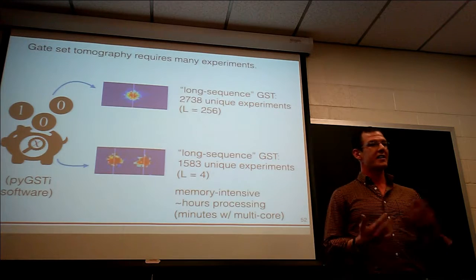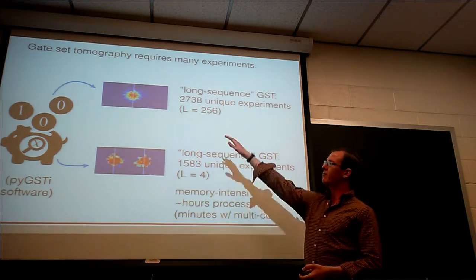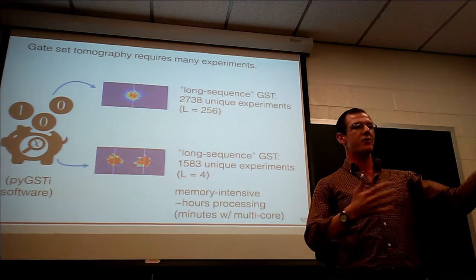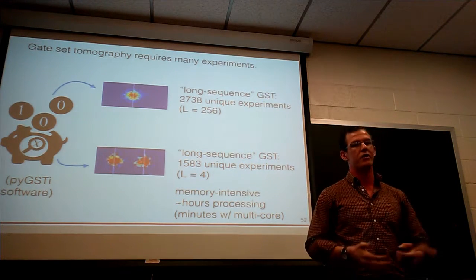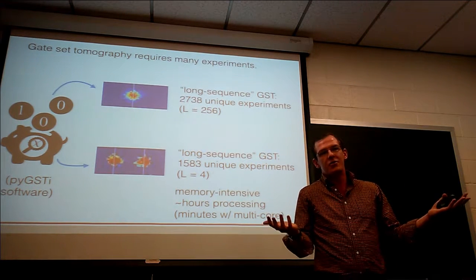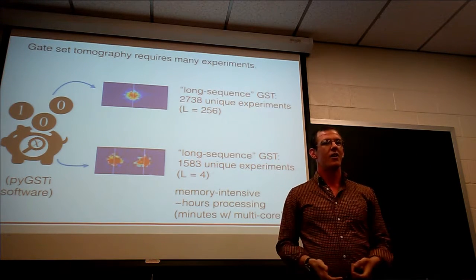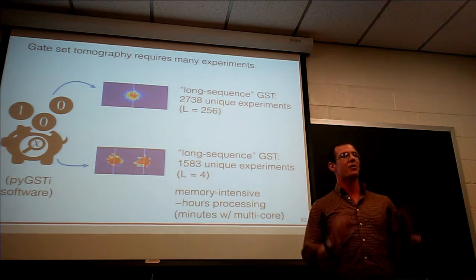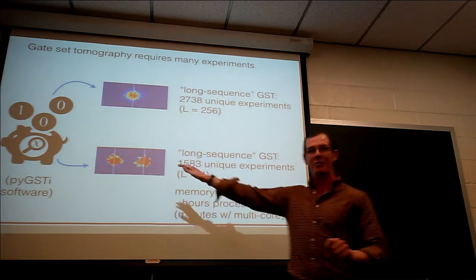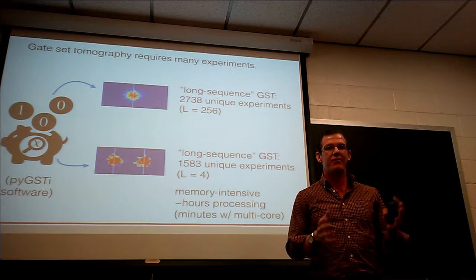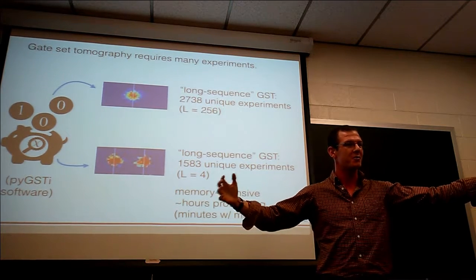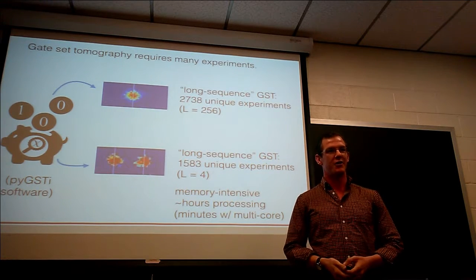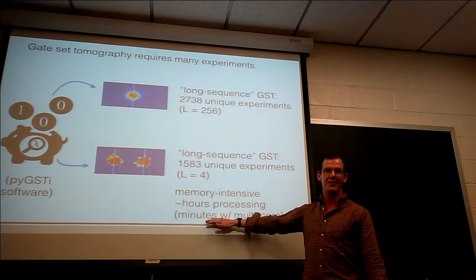Something closer to home is gate set tomography at Sandia. If I want to do a complete black box characterization of a single qubit, I might need something like 2,700 unique experiments using long-sequence GST with a germ length of roughly 256. Recently we started working on two qubits, and even at much less accuracy, it still requires 1,600 experiments. We found that it was chewing up all the memory on people's computers. Thankfully, Eric Nielsen managed to use MPI to beat that runtime to minutes using multi-core processing.